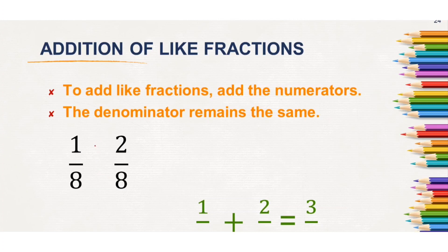That means here 1 plus 2 you need to add, and 8 remains the same. 1 plus 2 is 3, and the 8 and 8 are the same denominator — you write it as it is. So, 1 by 8 plus 2 by 8 equals 3 by 8.